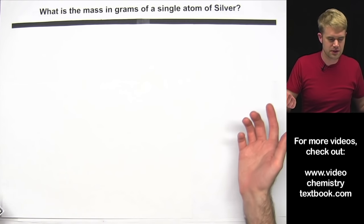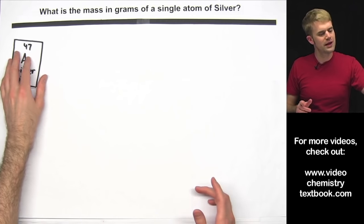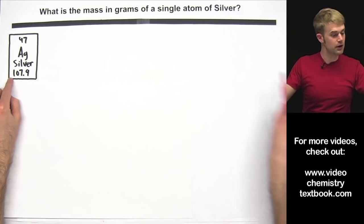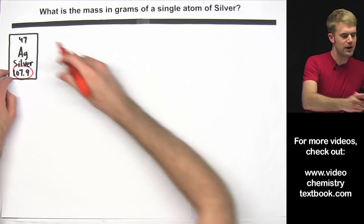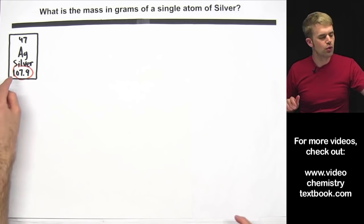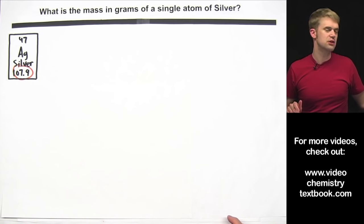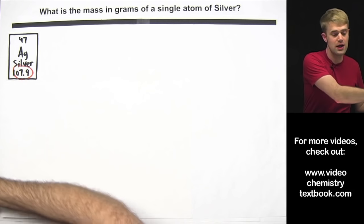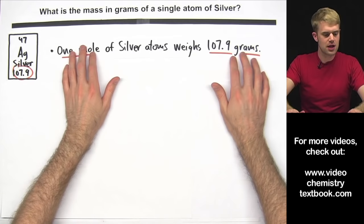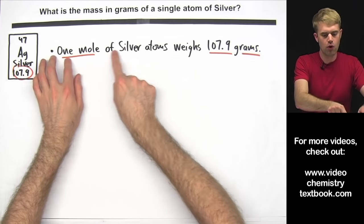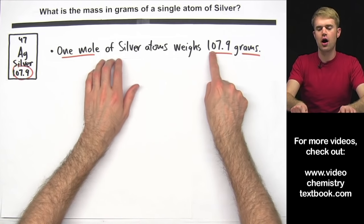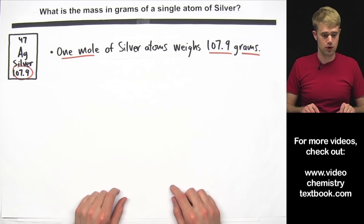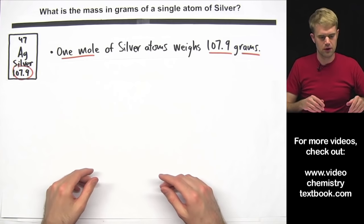What do we know about the mass of silver? We can look it up on the periodic table, and the number 107.9 tells us the molar mass of silver. It tells us how much one mole of silver weighs in grams. So we can say that one mole of silver atoms weighs 107.9 grams. That's what we know about the mass of silver.